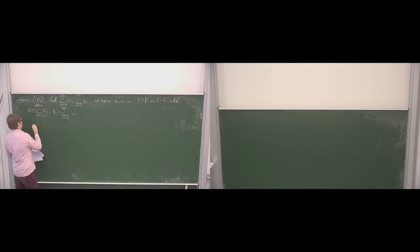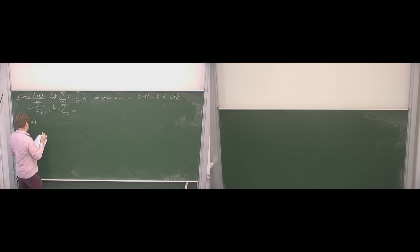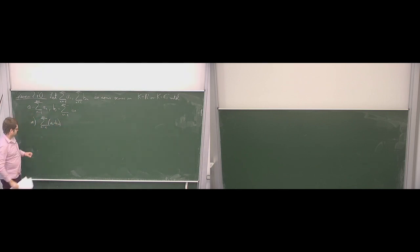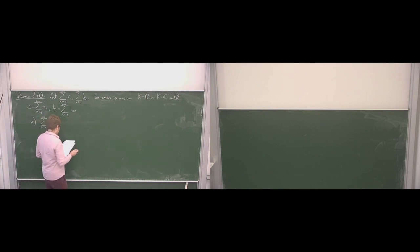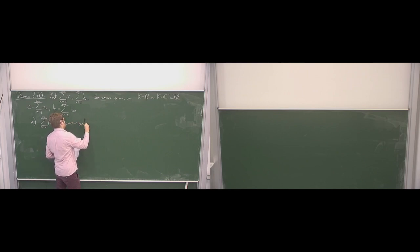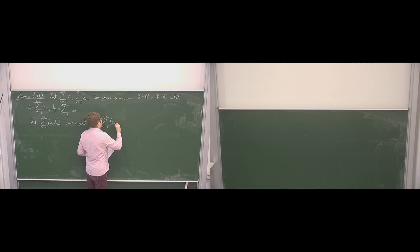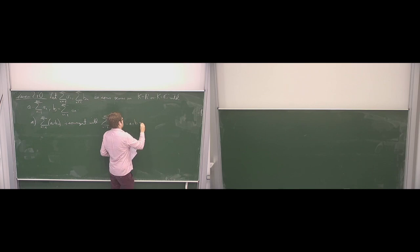First part: the sum rule. We have the sum rule for limits, and for series this looks as follows. Namely, the sum of a_n plus b_n — so we just add the pairs with the same index — this then converges, and the limit of the sum a_n plus b_n is simply the sum of the limits. Of course, in terms of series, this reads like this.